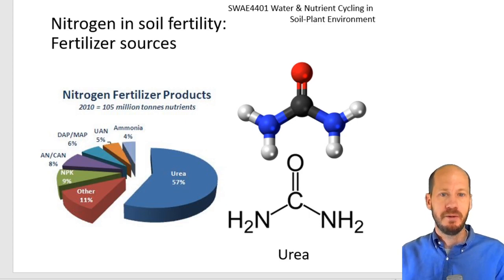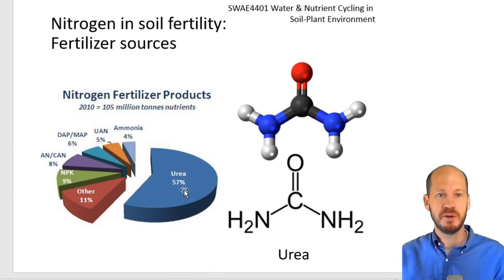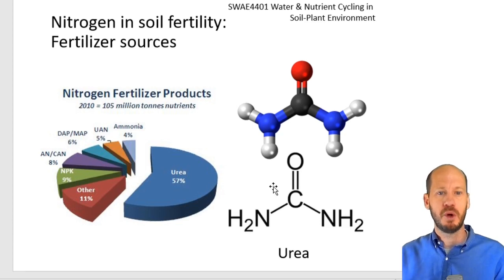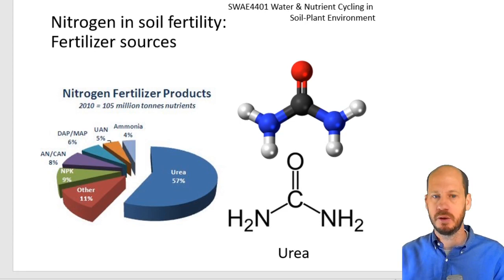The most used nitrogen fertilizer products are urea and ones associated with phosphorus: monoammonium phosphate and diammonium phosphate. We also have other sources of nitrogen fertilizer, like ammonium nitrate, for example.